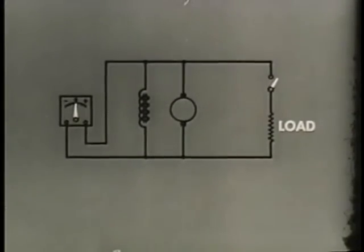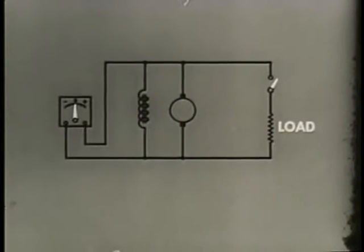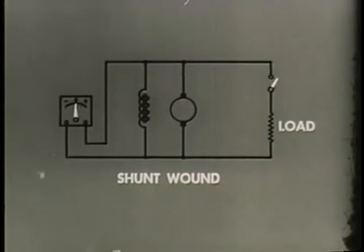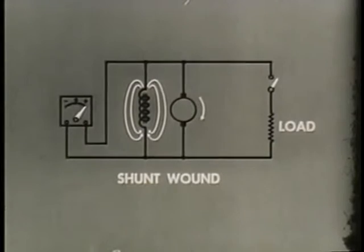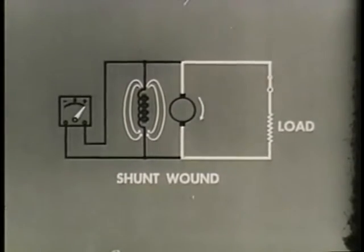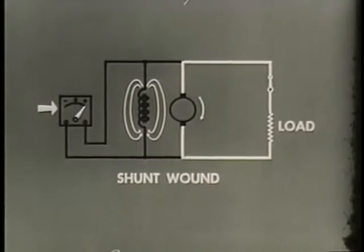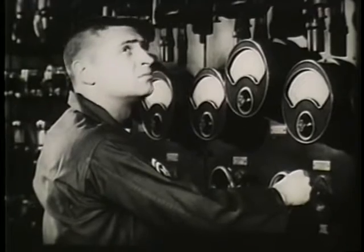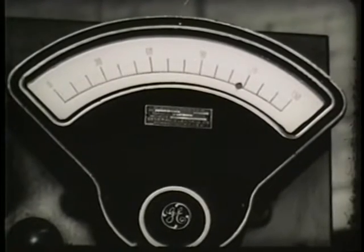When the field winding is connected in parallel with the armature and the load instead of in series, we have a shunt-wound generator. Now the field current is independent of the load current. Therefore, an increase in armature current will not cause an increase in the voltage output. Voltage regulation here is greatly improved. In shunt-wound generators, changing load causes relatively small change in voltage output.